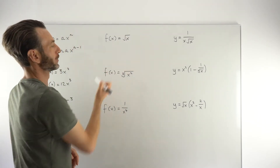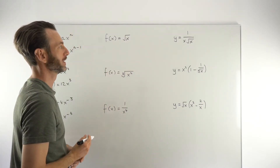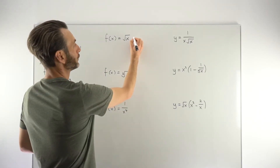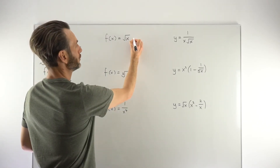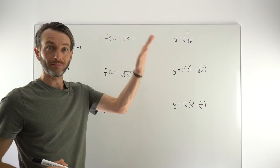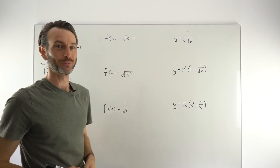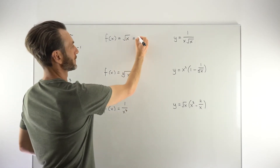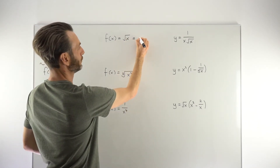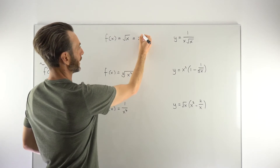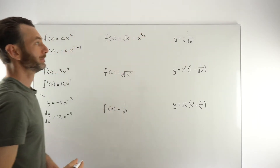A really common one: the square root of X. How do we differentiate that? Casting your mind back to your exponent rules, a square root is the same as a one-half power. So the square root of X is just X to the power of one-half. That is now in the correct format — the number in front is just a one, the power is one-half.